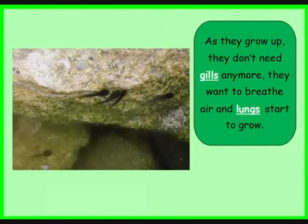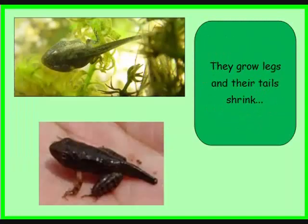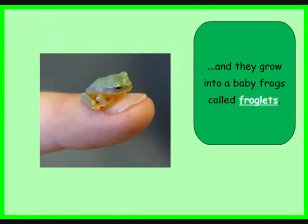As they grow up, they don't need gills anymore. They want to breathe air, and their lungs start to grow. And they grow legs, and their tails shrink. And they grow into baby frogs called froglets.